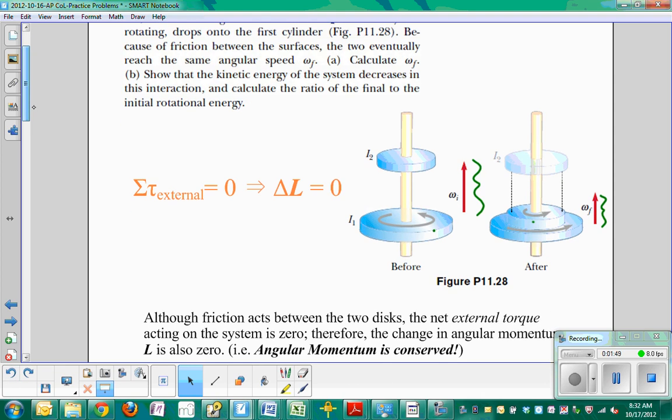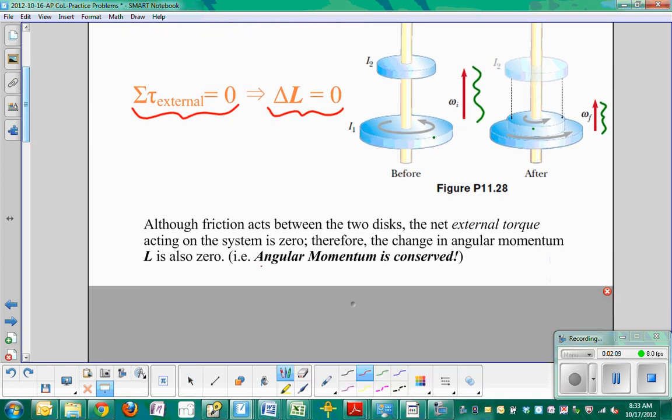Alright, so here's what I just said, but it's in math terms. Okay, since the net external torque is equal to zero, that is, the forces are internal to the system, that the change in the angular momentum of the system will be zero. Another way of saying that is that angular momentum is conserved.